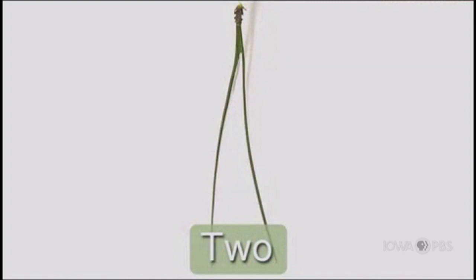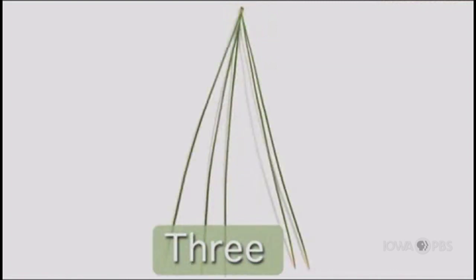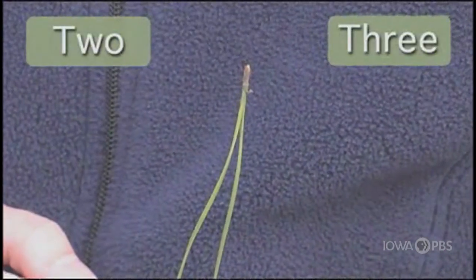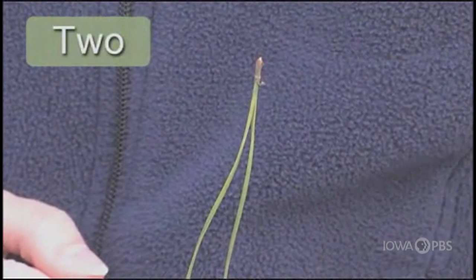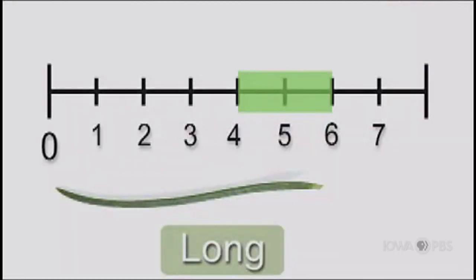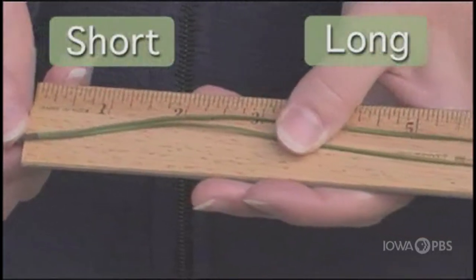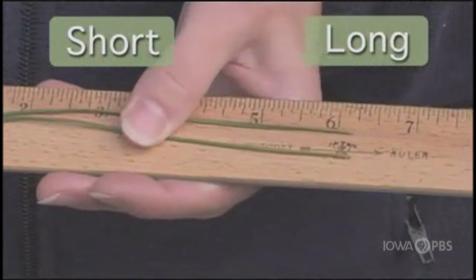The next question in the key is: does this tree have needles that occur singly, or in multiple bundles or tufts? They occur in multiple bundles. To answer the next question in the key, we need to count the number of needles in the bundle. Are there two needles in a bundle, or three or more? There are two needles in the bundle. The next question refers to the length of the needles — are they long or short? Long needles are four to six inches long, and short needles are less than three inches. These needles are six inches in length, so they are long.